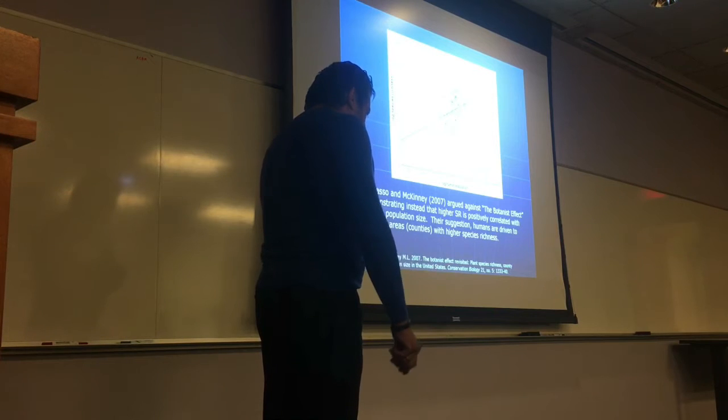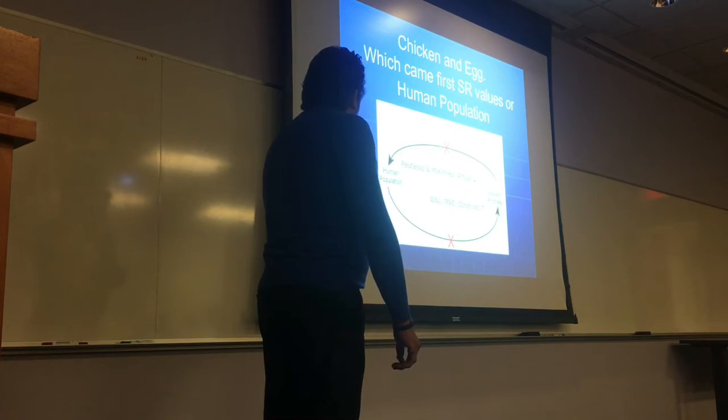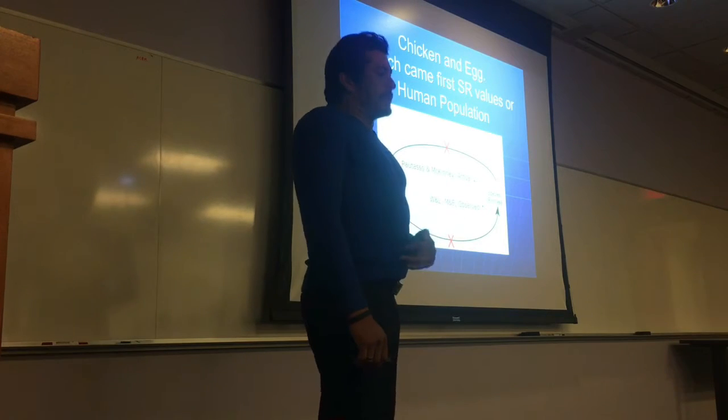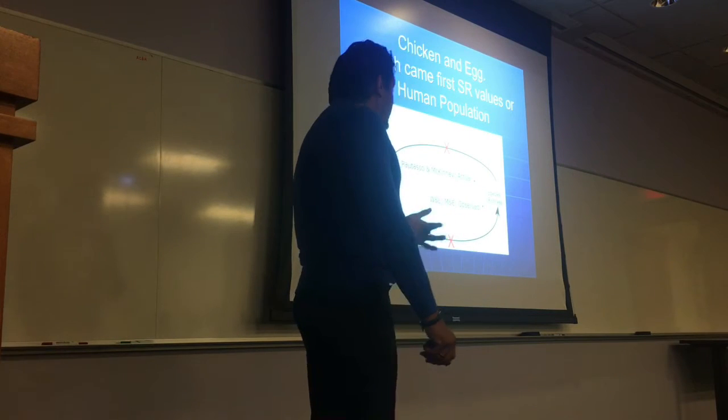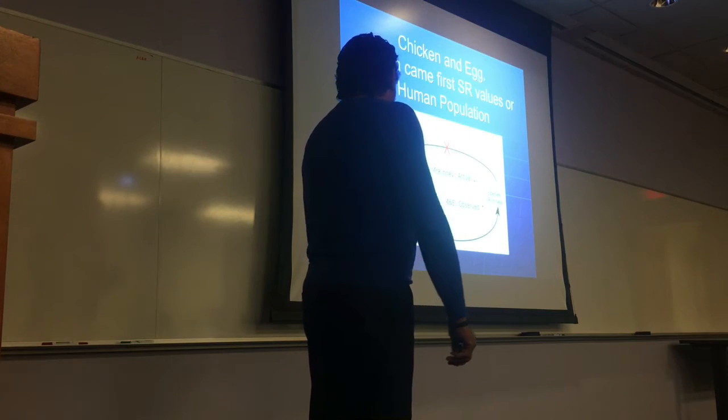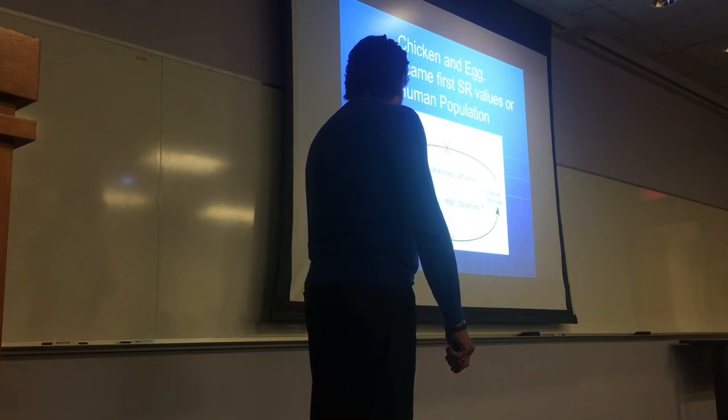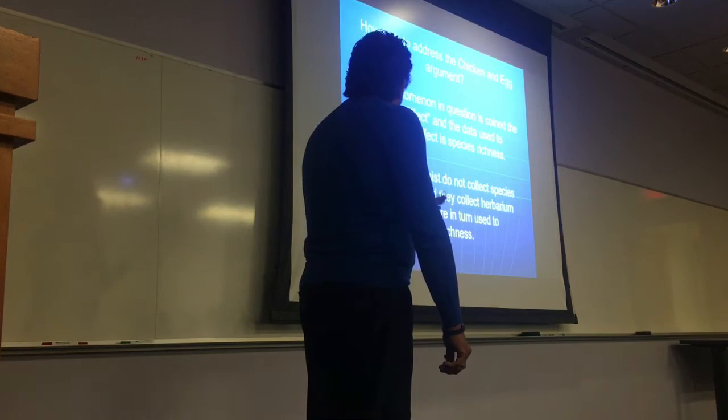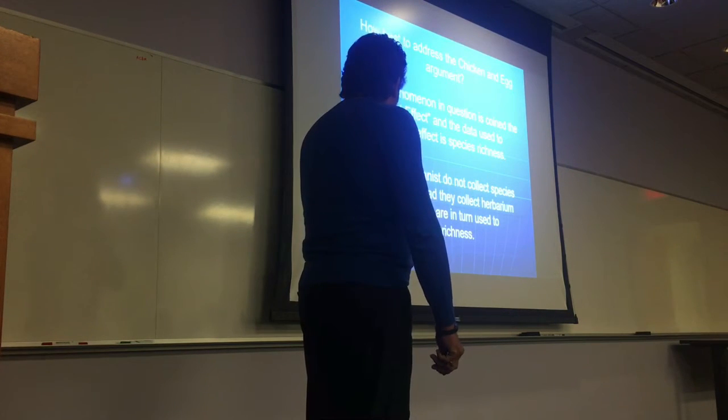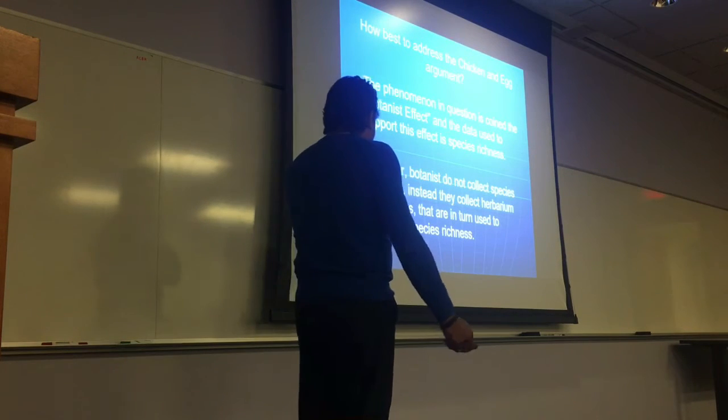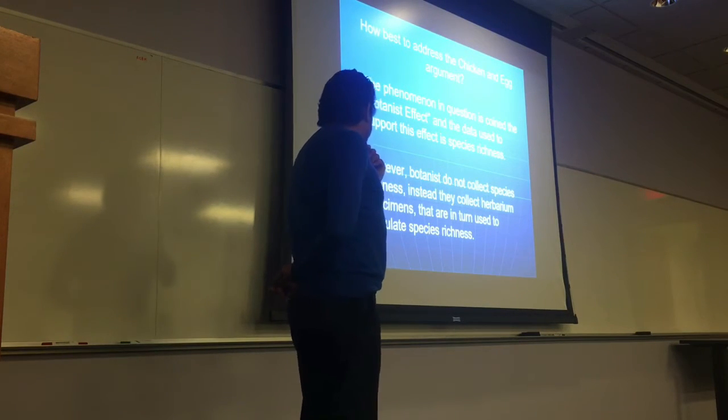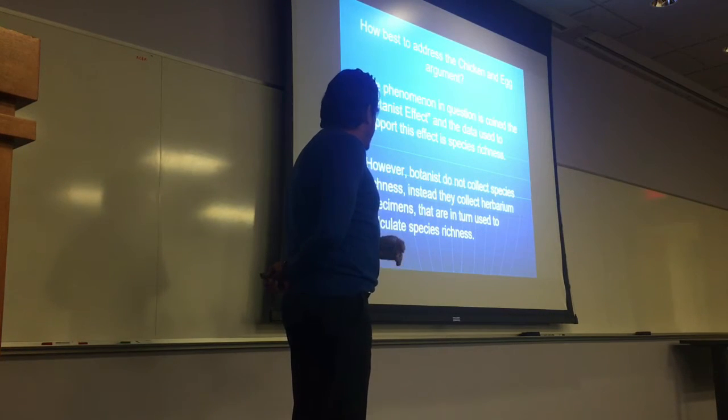Problem is, I would argue that they're both making a mistake here. And the mistake is that botanists do not collect species richness. Instead, what are they collecting? They're collecting specimens, not species richness. So again, you have this circular argument here, there's chicken and egg. So I can say, how best to address this chicken and egg? The phenomenon question is coined the botanist effect and the data used to support this effect of species richness. So again, repeat: botanists do not collect species richness. Instead, they collect herbarium specimens and are, in turn, used to calculate species richness.